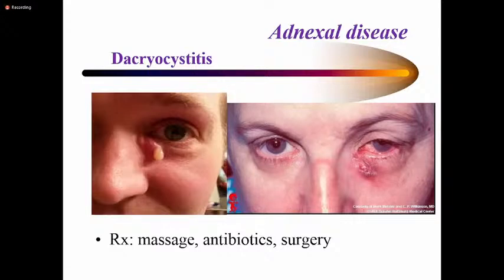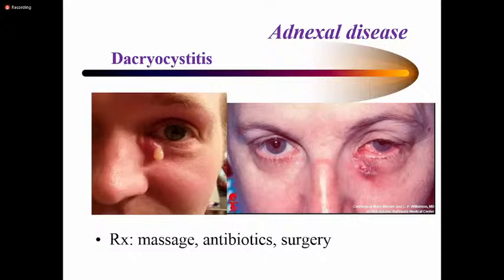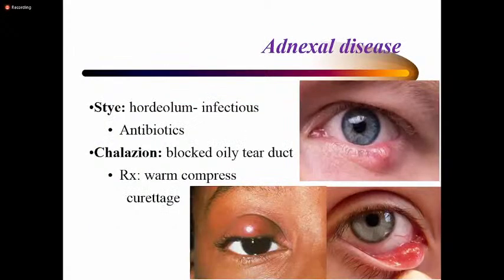Dacryocystitis is inflammation of the lacrimal duct, situated between the eye and the nose. You get swelling and pus in the sac, and if untreated it can perforate and cause a fistula, or extend into the nasal cavity causing further infection. Treatment involves massage, antibiotics, and sometimes surgical intervention.